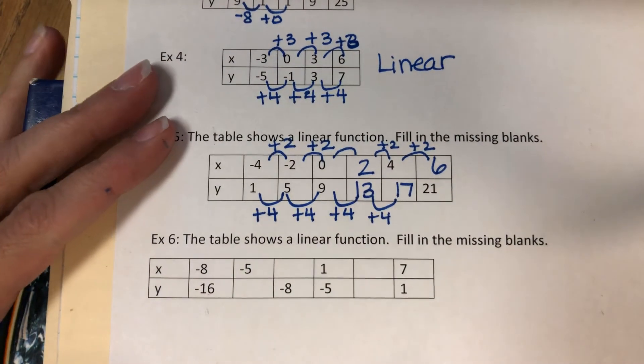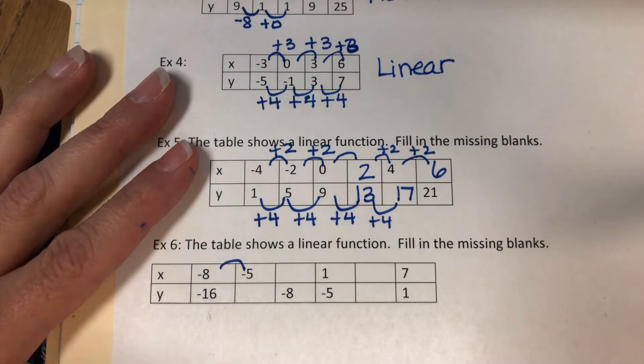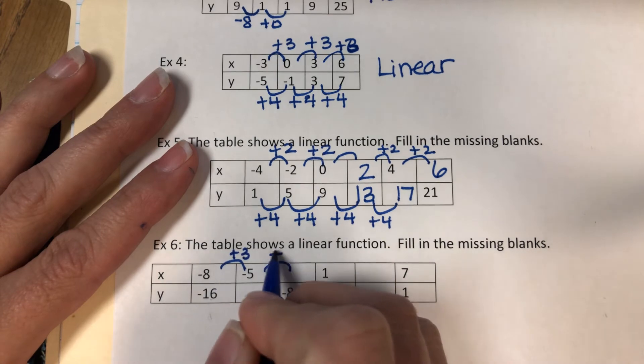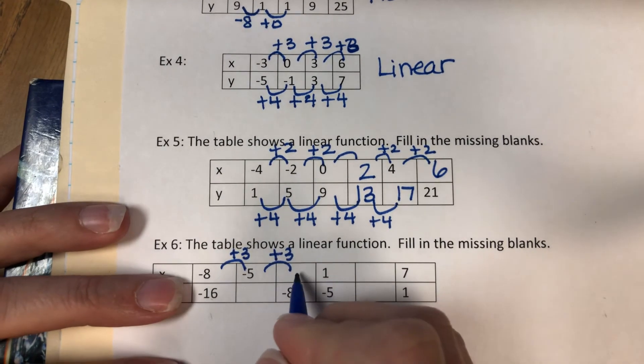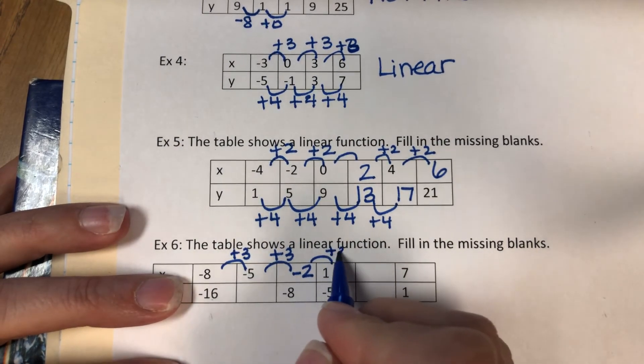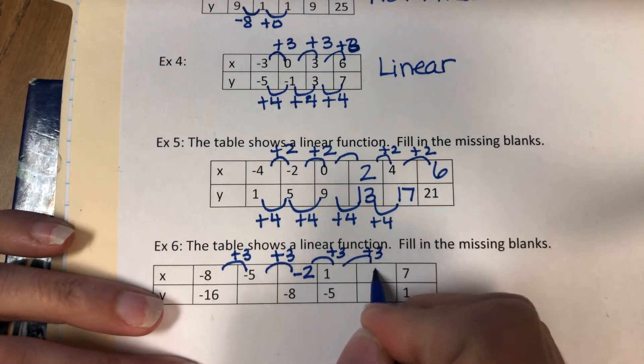Let's look at number 6. Negative 8 to negative 5, you add 3. So that means we're going to take negative 5 and add 3. So negative 5 plus 3 is negative 2. Negative 2 plus 3 is 1. 1 plus 3 is 4.